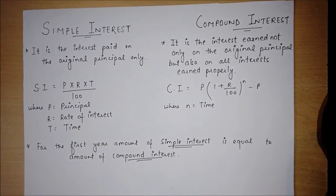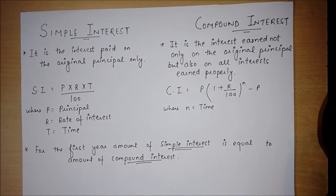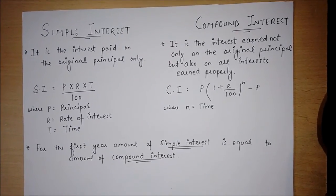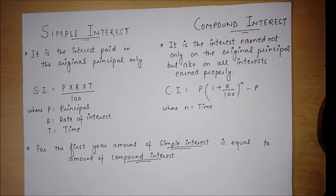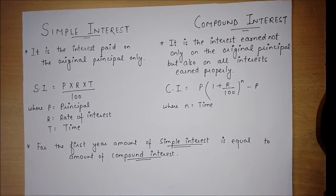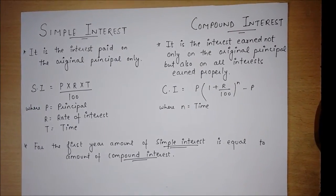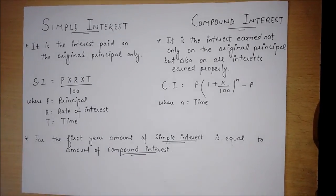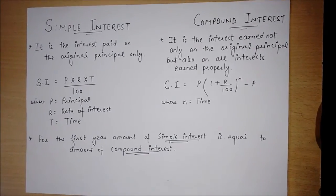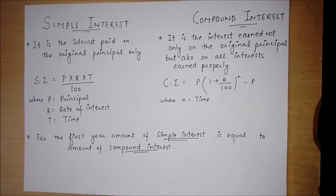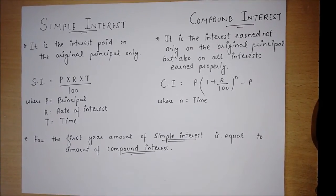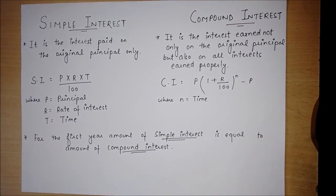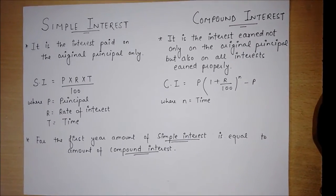Simple interest is the interest paid on the original principal only. Compound interest is the interest earned not only on the original principal but also on all interest earned previously.